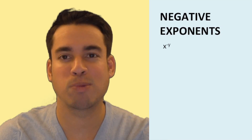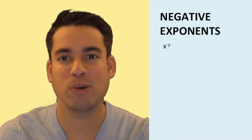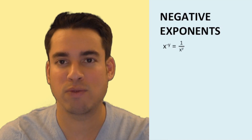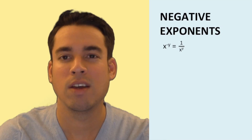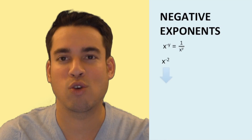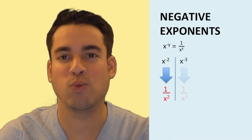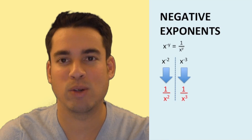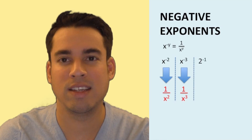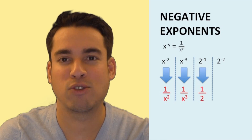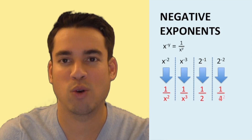Now let's talk about negative exponents. A negative exponent means you take that number, put one above it, place the base in the denominator, and flip the exponent to positive. For example, x to the negative two is one over x squared; x to the negative third is one over x cubed. With actual numbers: two to the negative one is one half; two to the negative two is one over two squared, or one fourth.